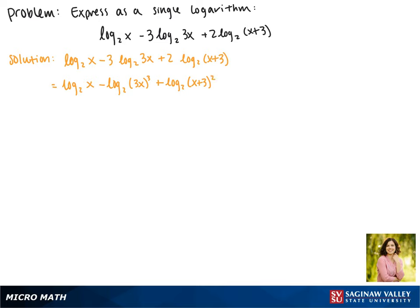Simplifying the things being raised to exponents gives us the log base 2 of x, minus the log base 2 of 27x cubed, plus the log base 2 of x squared plus 6x plus 9.